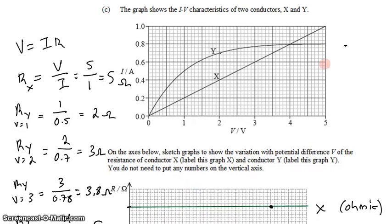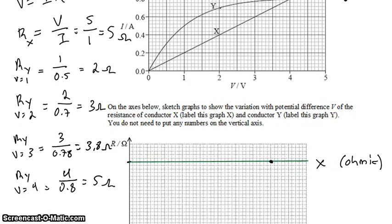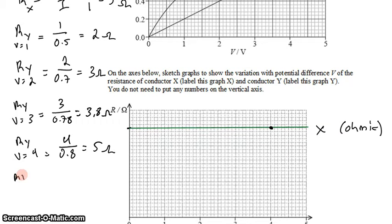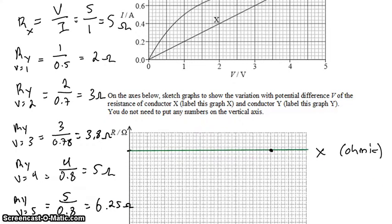And lastly, way out here at 5 volts, it looks like it's also about 0.8. So when the voltage is 5, 5 volts divided by 0.8 gives us about 6.25 ohms. So what we expect to see is we expect to see a linear increase in resistance.